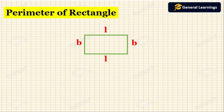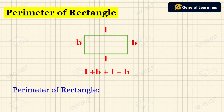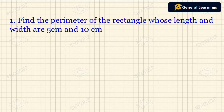Here they have given a rectangle. We know that in a rectangle opposite sides are equal, so the sides are L, L, B, and B. Perimeter is the sum of all sides, so L plus B plus L plus B, which can be written as 2L plus 2B, or 2 into L plus B. So the perimeter of the rectangle is 2 times the sum of length and width.